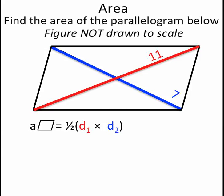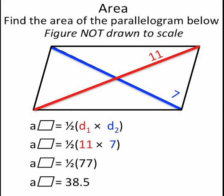So we can use substitution and substitute those values into the equation, and we get 1 half of 11 times 7, or 1 half of 77. Multiply that out, and we get 38 and a half, or 38.5. So the value of the area of this parallelogram is 38.5.